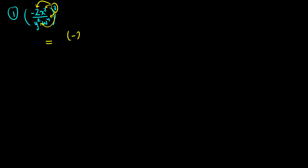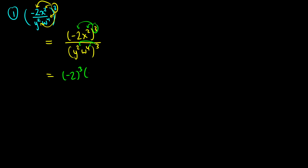This power gets distributed to the top and the bottom. So another way of writing this is negative 2x squared, all cubed, divided by y squared times w to the fourth, all cubed. We can then distribute the cubed into each variable or constant: negative 2 cubed times x squared cubed, divided by y squared cubed times w to the fourth cubed.